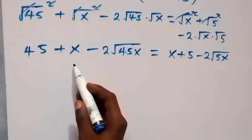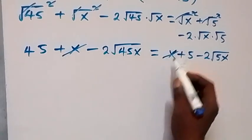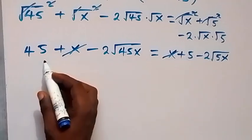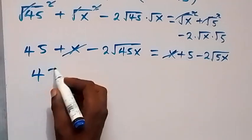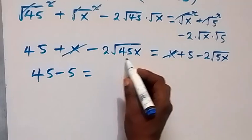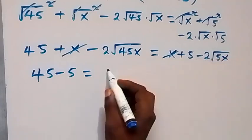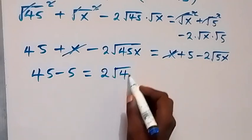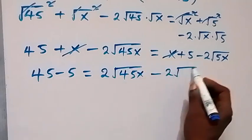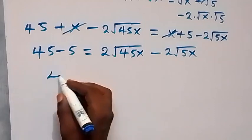We have x on both sides, so we subtract x from both sides and they cancel out. Taking 5 to the left gives 45 minus 5, and taking minus 2 root 45x to the right gives us 2 root 45x minus 2 root 5x. That leaves us with 40 on the left.